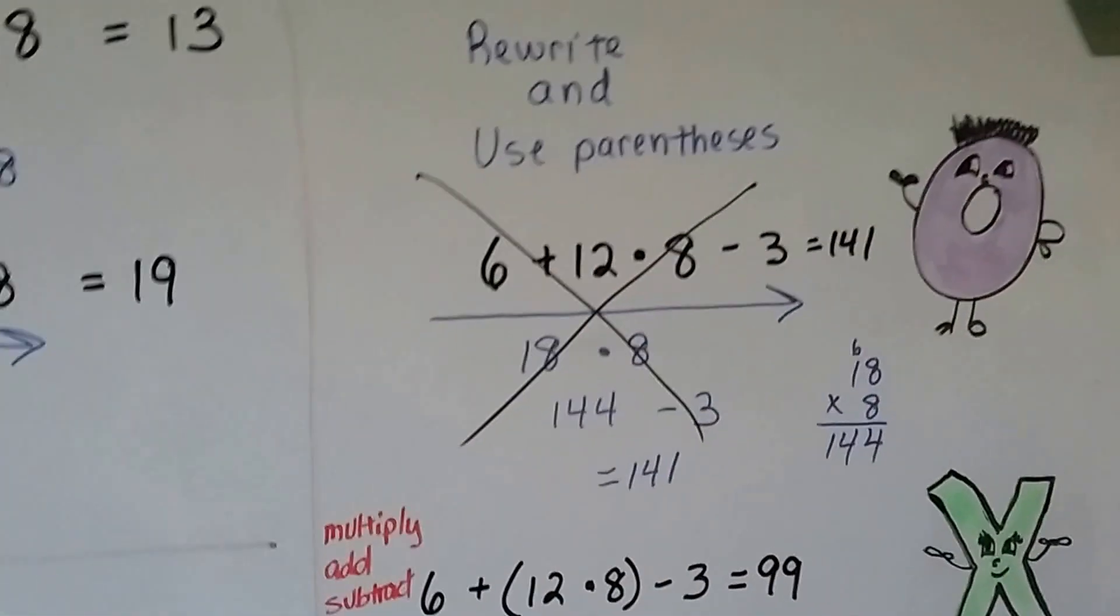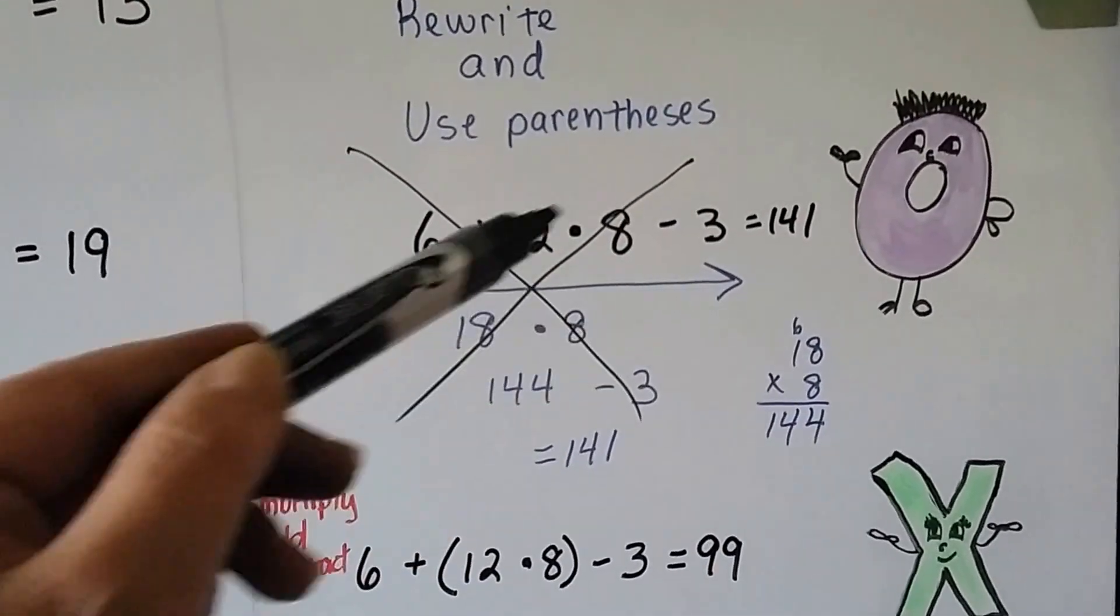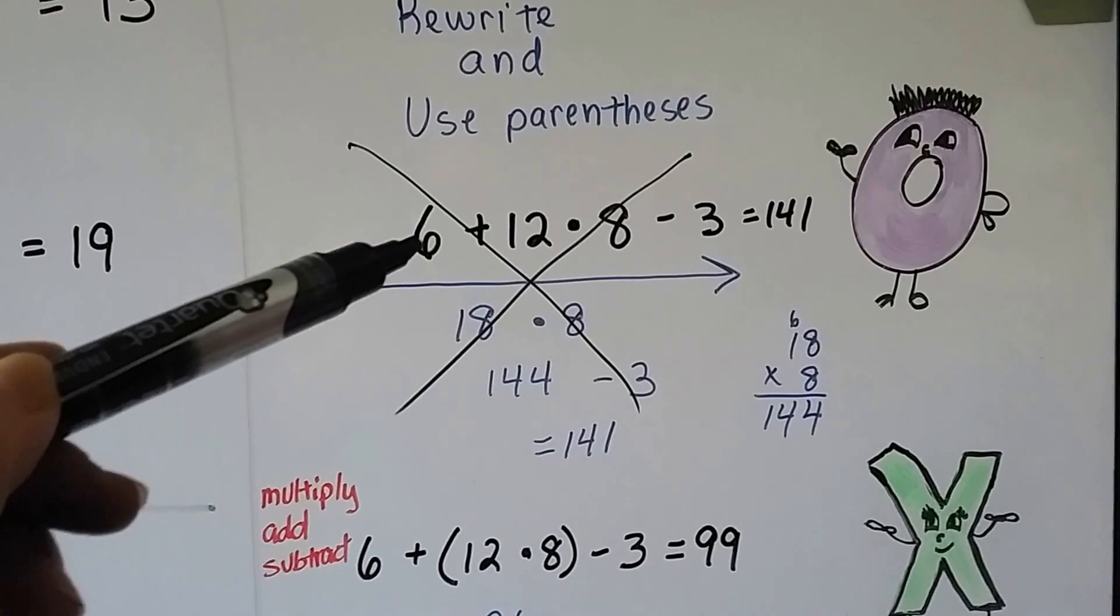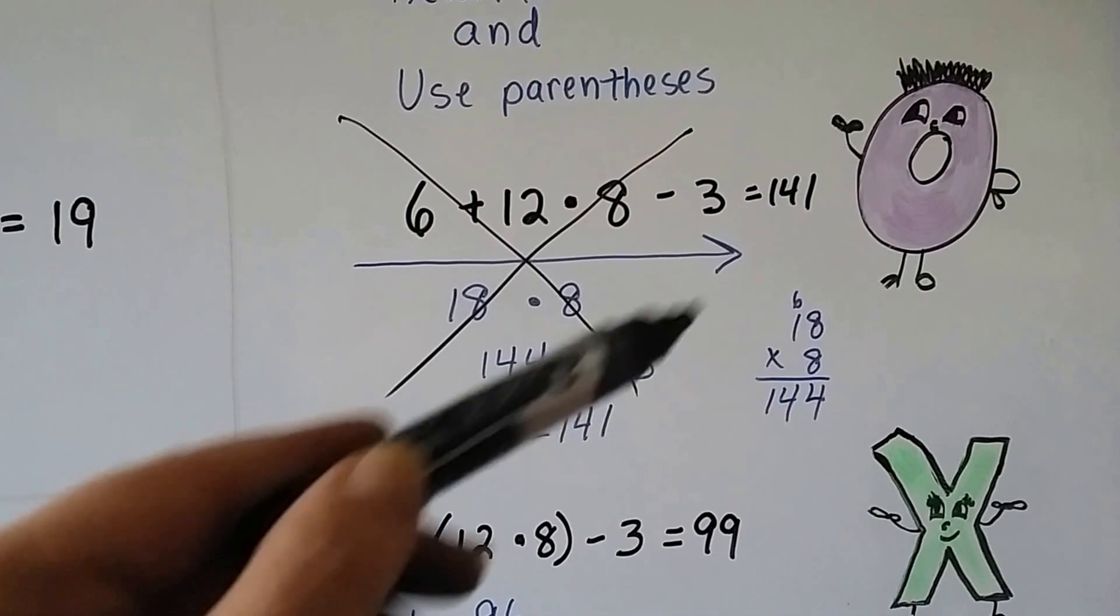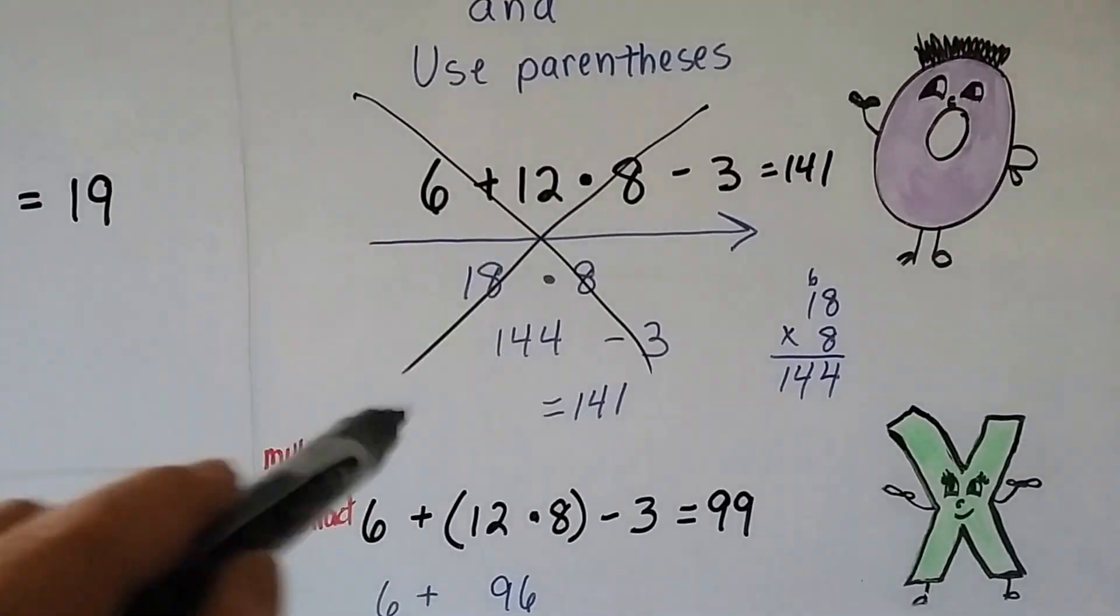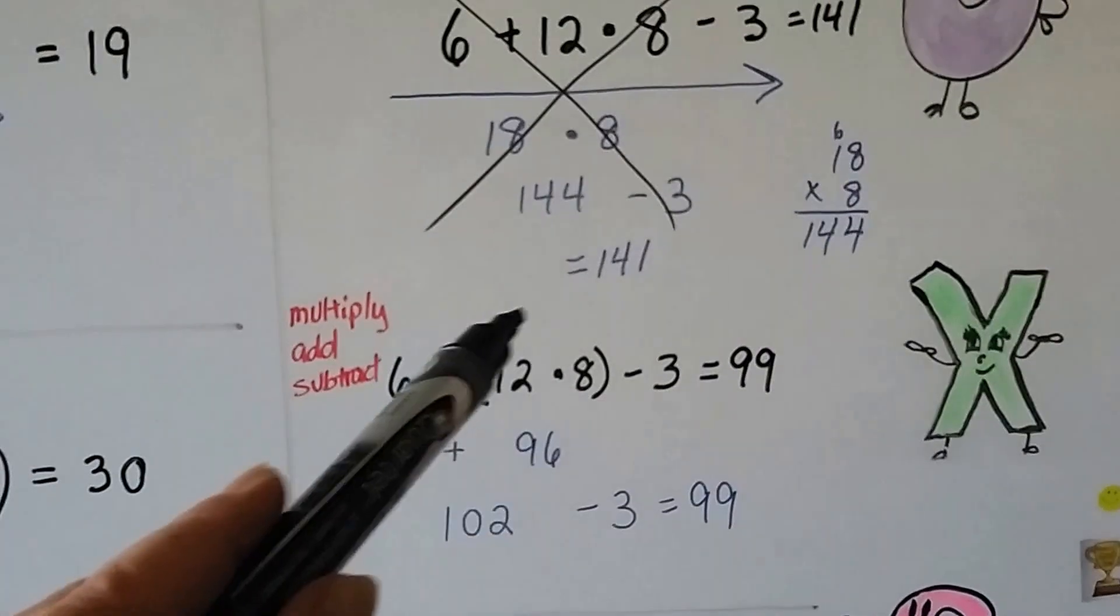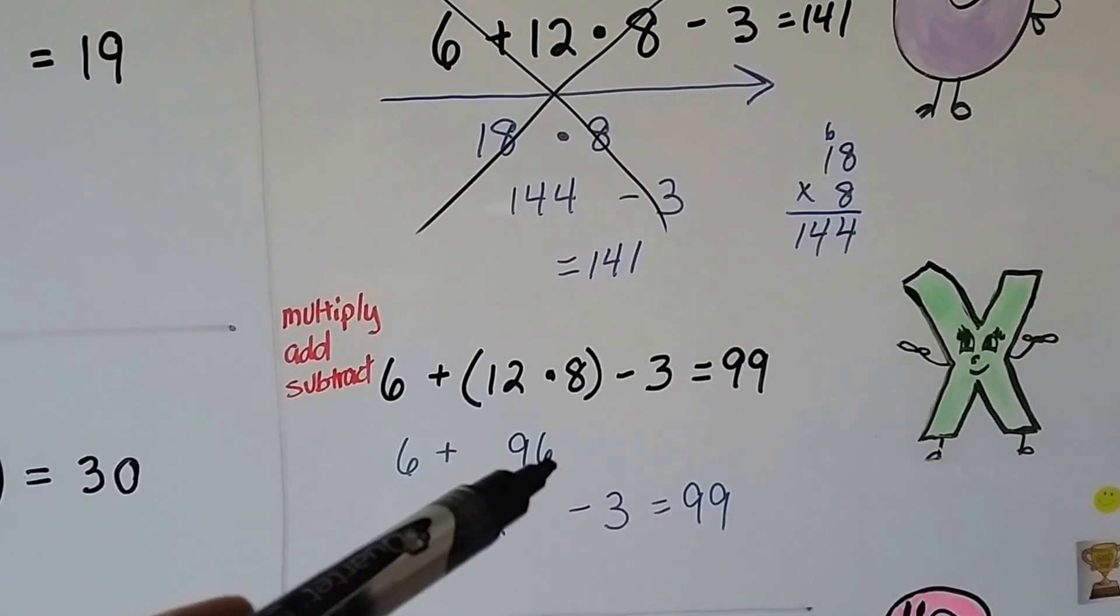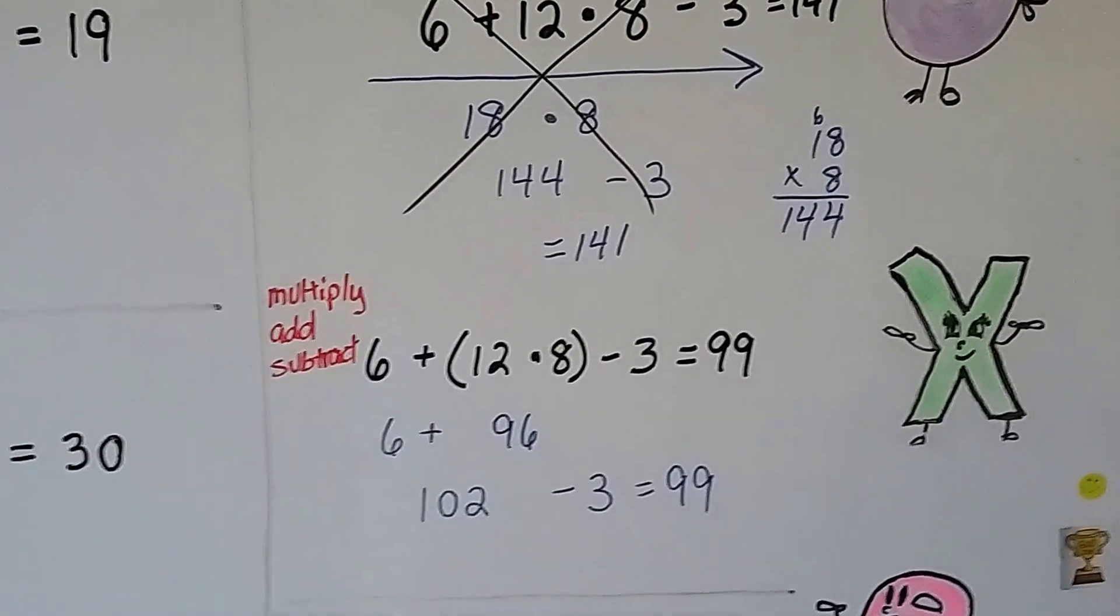You might have to rewrite and use parentheses. So this would be the wrong way going straight across because I see multiplication here. We would do it wrong if we did 6 plus 12, which is 18, times 8, which is 144 minus 3, to get 141. It's wrong. You want to do the multiplication first. You can put it in parentheses to help you, help your eyes. That means we have 96. We go back to add the 6, then we go back to take away the 3, and we get 99.